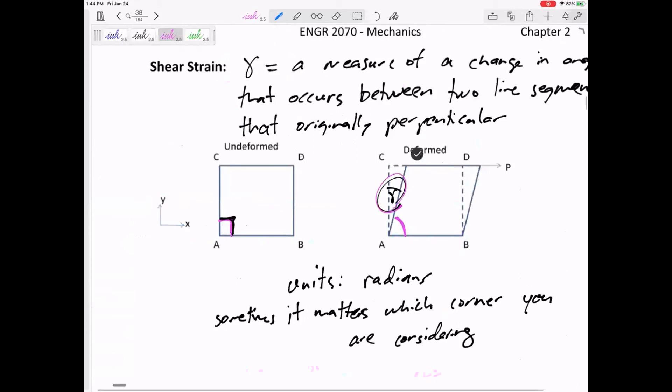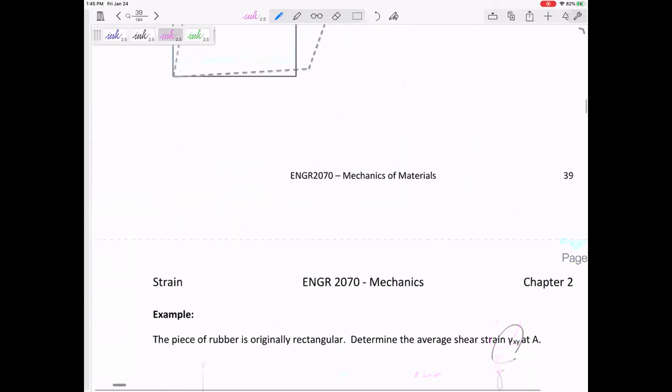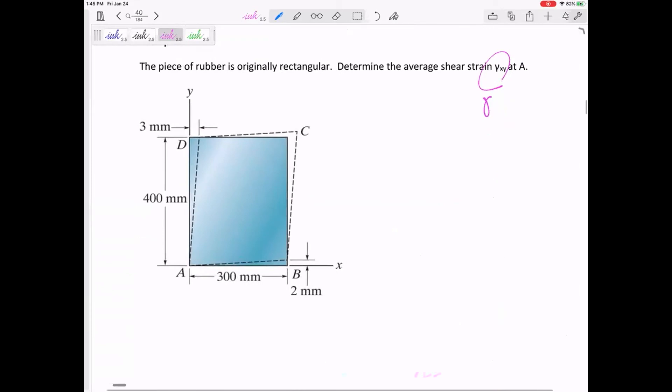I said that angle is our gamma, but gamma is the change in angle from 90 degrees. So we need to find that plus that and add those two up. If it's two degrees here and one degree here, it would have changed by three degrees.